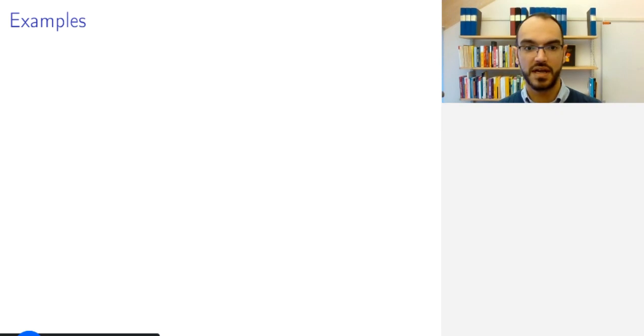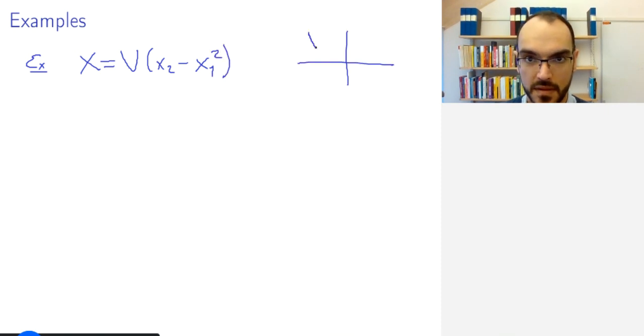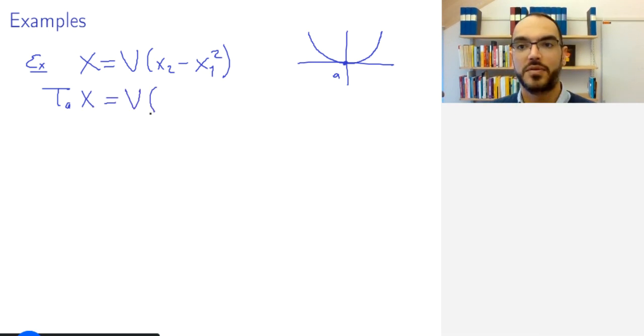Let's look at a few examples. First, let's look at the case where our X is the vanishing set of x2 minus x1 squared. So, this is this function. And I take my a at the origin and then T_a of X is the vanishing set. And now I will directly look at the degree 1 terms. If you wish, you can check the derivative definition on this. But the degree 1 term here is x2, not x squared, and V(x2) is this x1 axis. As expected. So, this seems reasonable.